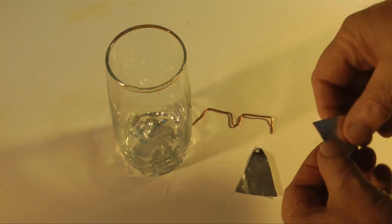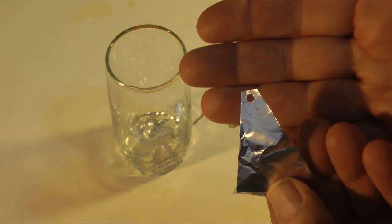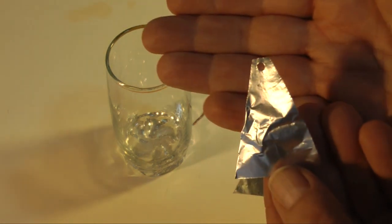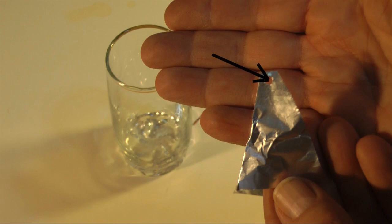Cut two identical triangles of aluminum foil. Cut them so that they fit into the glass you're using. Punch holes in the top of each triangle.